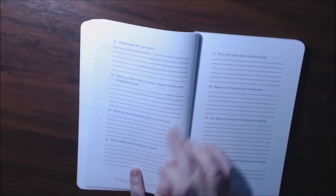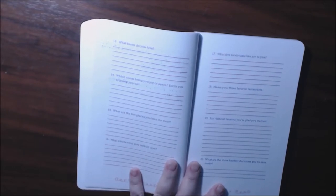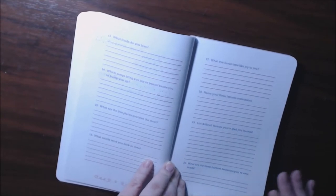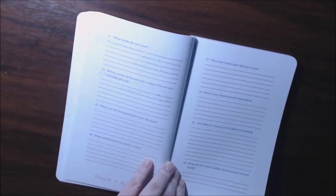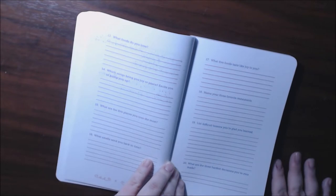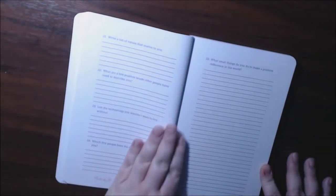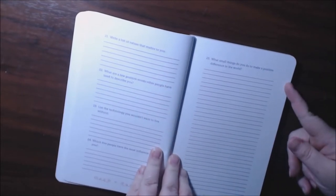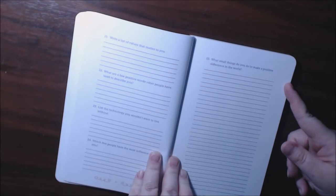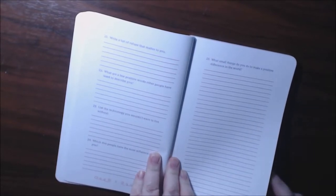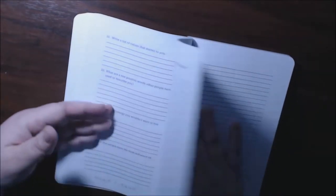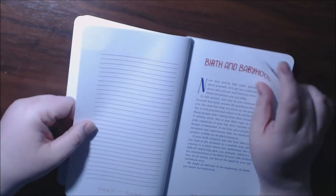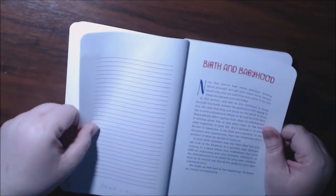Like what foods do you love the most? What songs bring you joy? What are the five places you love the most? What smells send you back in time? List difficult lessons you're glad you learned. The hardest decisions you've ever made. List of values that matter to you. What small things do you do to make a positive difference in the world? Technology you wouldn't want to live without. Wow. I just think these questions and all are so interesting. And things that maybe you wouldn't find in other books.